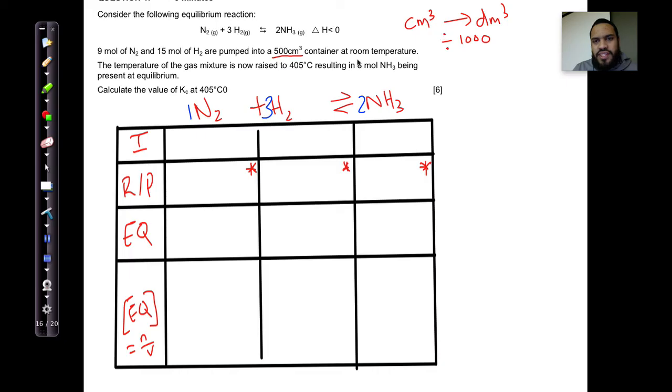Let's convert 500 centimeters cubed. So, 500 centimeters cubed is equal to 0.5 decimeters cubed because I've divided by 1,000. The temperature of the gas mixture is now raised to 405 degrees Celsius, resulting in 8 moles of NH3 being present at equilibrium. Calculate the value of Kc at 405 degrees Celsius.